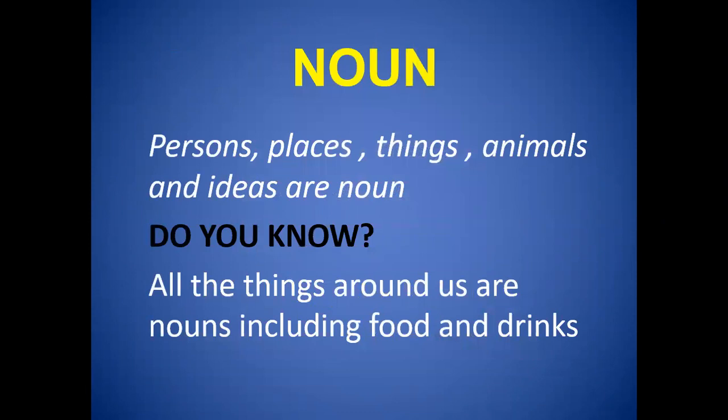Basically, everything around us has a name. These things could be persons, places, things, animals, or ideas — they all have names. So the persons, places, things, animals and ideas are called nouns. Their names are called nouns.